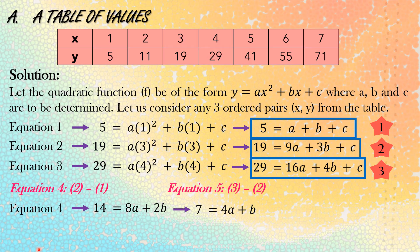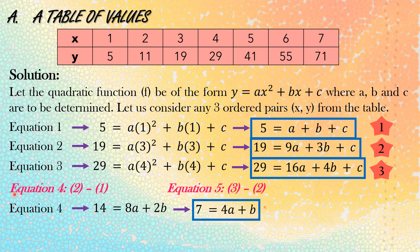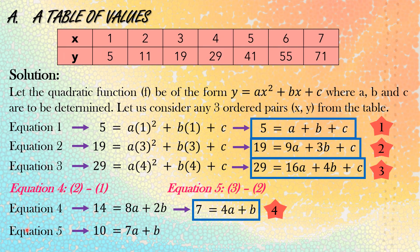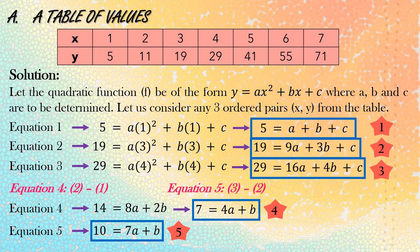We can simplify equation 4 by dividing the whole equation by 2: so 7 equals 4a plus b. For equation 5, subtracting equation 2 from equation 3: 29 minus 19 is 10, 16a minus 9a is 7a, 4b minus 3b is b, and the two c's cancel out. Therefore, equation 5 is 10 equals 7a plus b. We now have all five equations.